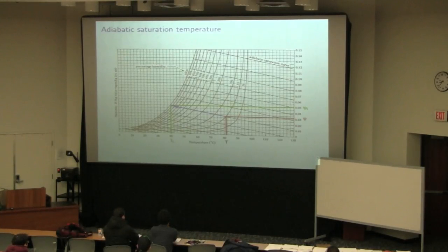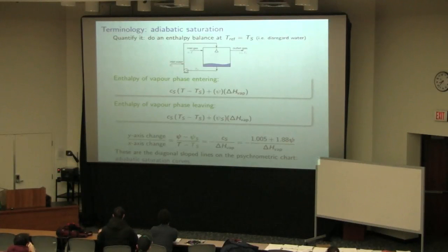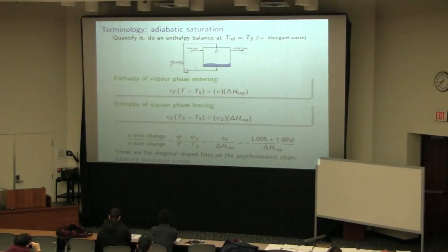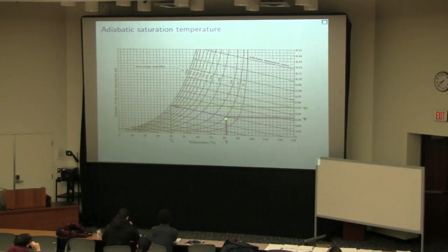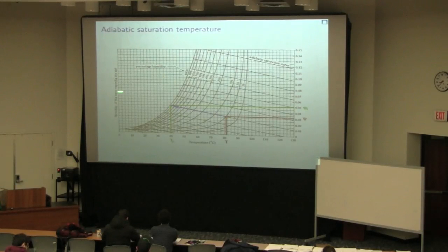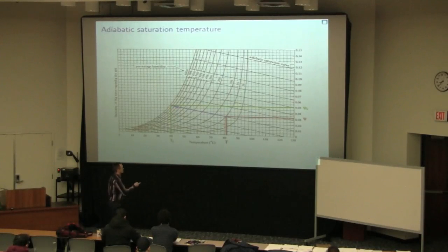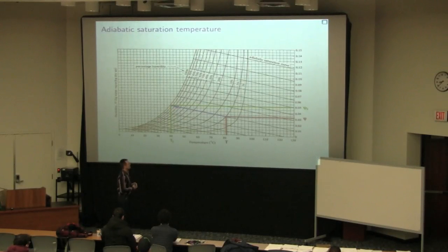If we look at our inlet conditions — temperature T and humidity psi — we move to psi_s and T_s at 100% saturation. That stream leaving is in equilibrium; we've saturated the air as much as possible at temperature T_s. So we've moved from the inlet point on the x- and y-axis up to the 100% saturation curve along an adiabatic line, and that temperature T_s is the adiabatic saturation temperature. For example, an incoming stream at roughly 80°C cooling down to about 40°C while its humidity increases.